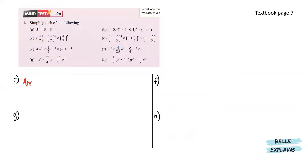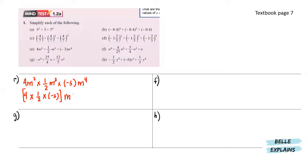For e, we have 4m to the power of 2 times 1 over 2m to the power of 3 times negative 3m to the power of 4. Here we have a numerical coefficient in front of the base m. So let's accumulate all the numbers to one side, and collect the m terms. The powers are 2, 3, and 4, so 2 plus 3 plus 4 gives us 9. The numerical is 4 times 1 over 2 times negative 3, which gives us negative 6. So the answer is negative 6m to the power of 9.